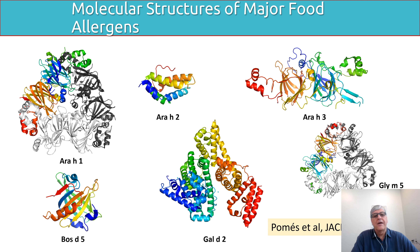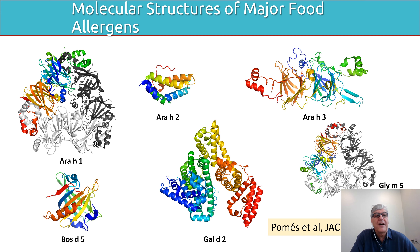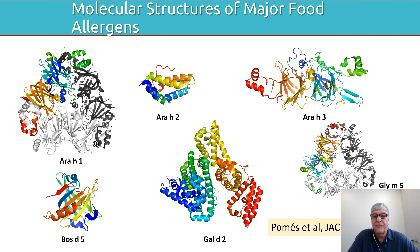We know the three-dimensional structures of major food allergens. You can see from the slide similarities, for example, between Ara h1 and Gli-m5 — these are trimeric proteins, and each subunit of the trimer is about 60,000 molecular weight, making them very large molecules. On the other hand, Ara h2 is small at 17,000 molecular weight and is a very potent allergen. For allergy diagnosis, Ara h2 is actually a better predictor of peanut food allergy than peanut protein itself.